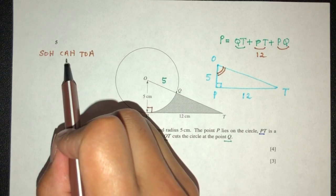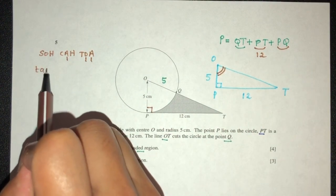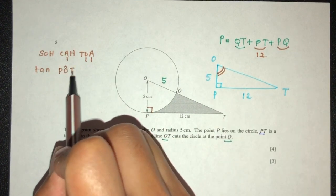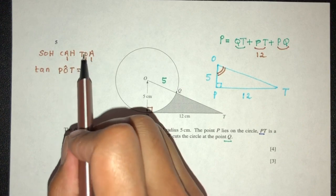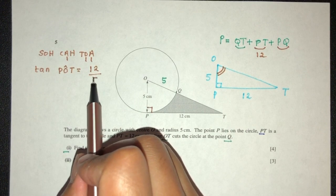Here we have the A side. A side, A side. Here we have the O side. That will be this. So we have tan of the angle that we don't know. That is angle POT is equal to opposite side, which is 12, over adjacent side, which is 5.